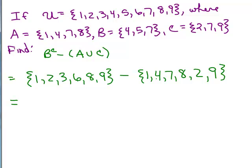And now what do I do, do you remember? You want anything left in this first set, which is B complement, that's not over here on the right. So let's see. Do I get to keep the one? No, because there's a one over there. Do I get to keep the two? No, because there's a two over there.